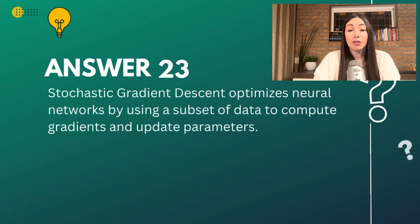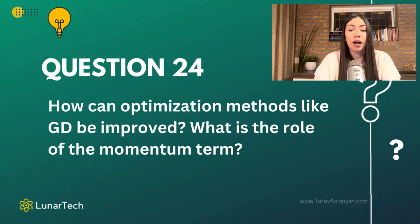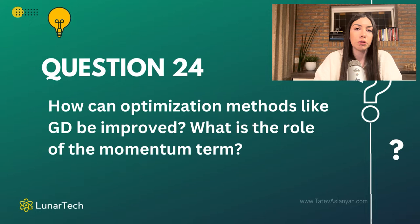The next question is how we can use optimization methods like GD in a more improved way. Whenever you hear momentum and GD, try to automatically focus on SGD with momentum, because SGD with momentum is basically the improved version of SGD. As far as you know the difference between SGD and GD, it will be much easier to explain what SGD with momentum is.